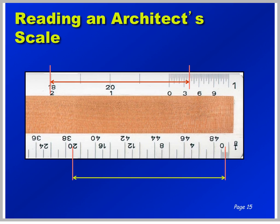Reading the 1-inch equals a foot scale here: we have 2 feet going this direction — 1, 2 — and from the zero mark we have 1, 2, 3, 4 inches going the other direction. Final answer being 2 foot 4. Using the 1/8 inch scale equals a foot, we read from 0 all the way over to 20 feet — 4, 8, 12, 16, 20 feet — and from the zero mark we read 6 inches. Final answer being 20 foot 6 inches.